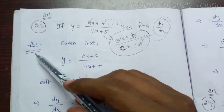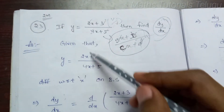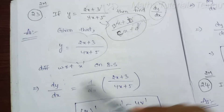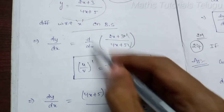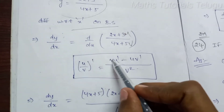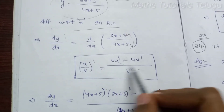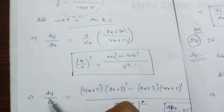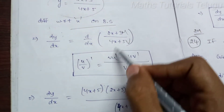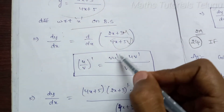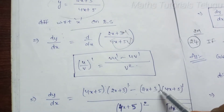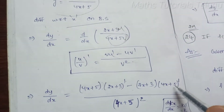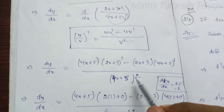dy by dx — the differentiation of y with respect to x — dy by dx is equal to d by dx of (2x plus 3) divided by (4x plus 5). So this is U and this is V. The quotient rule: (U/V)' is equal to (V·U' minus U·V') divided by V squared. Apply to this: dy by dx is equal to (4x plus 5) into U' minus (2x plus 3) into V', all divided by (4x plus 5) whole square.